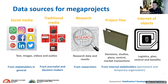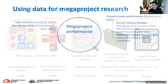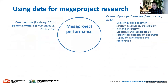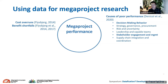Regarding mega projects, the idea is to contribute to better understanding why projects have poor performance. Research has demonstrated that we have cost overruns, benefit shortfalls, and insufficient value creation. Some research has tried to identify the reasons. With data from social media, we can bring ideas about decision-making behavior — a reason for poor performance — but also about stakeholder engagement and management.